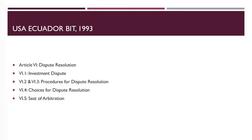Now let us look at another example: the USA-Ecuador BIT of 1993 — the treaty between the United States of America and the Republic of Ecuador concerning the encouragement and reciprocal protection of investments — which provides for dispute resolution in Article 6. The link to the BIT is provided in the description to the video. Article 6 defines an investment dispute to mean a dispute between a party and a national or company of the other party arising out of or relating to: (A) an investment agreement between that party and such national or company, (B) an investment authorization granted by that party's foreign investment authority to such national or company, or (C) an alleged breach of any right conferred or created by this treaty with respect to an investment.